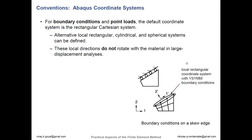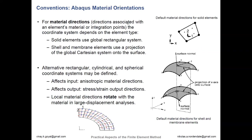For coordinate systems, it's important to note that both boundary conditions and point loads default to the rectangular Cartesian coordinate system. You can alternatively create local rectangular coordinate systems not in the global coordinate. You can also make cylindrical and spherical systems. The local directions do not rotate with the material in large displacement analysis, so you have to take care if you are using large displacements. You can also define material orientations — if you have a composite structure, you may need to apply orientations to apply angles. Material orientations affect both the input and the output: stresses and strains will be output along the material principal directions.